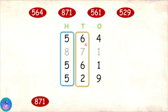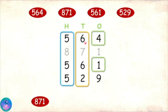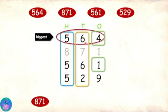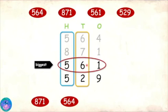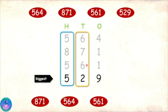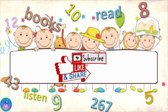We have 6, 6, and 2 in the tens place. 6 is the biggest, but two numbers have 6, so we check the ones digit. 4 is bigger than 1, which means 564 will come next. Then we are left with two numbers — in the tens place we have 6 and 2; 6 is bigger than 2, so 561 comes next. Then we are left with 529 only, and that is the smallest number. Very good, Sam, you have understood it very well!